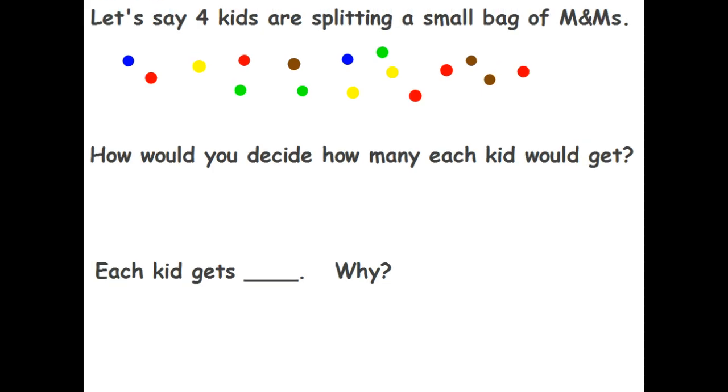Let's take a look at a group of objects. There are 16 M&Ms and let's say four kids are splitting them. How would we decide how many each kid would get? Well, that's not too hard. We have 16 M&Ms, four people, we want to divide them into equal shares. And you've known for a long time that when we divide things into equal shares we use division.